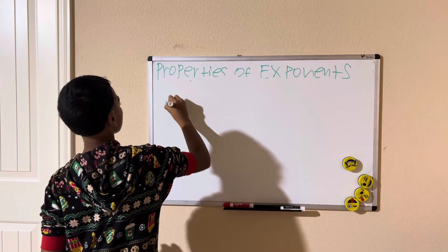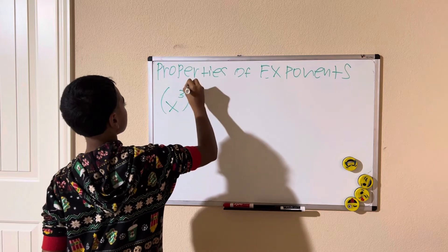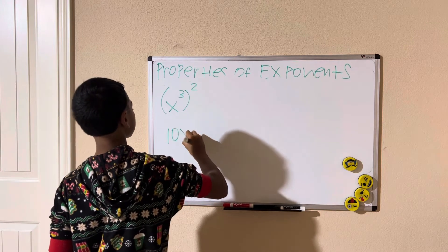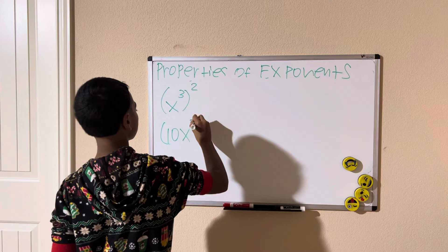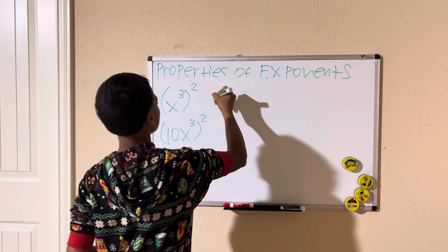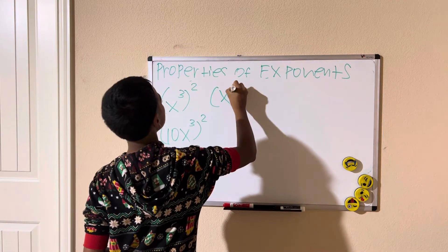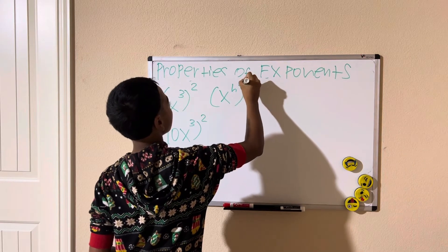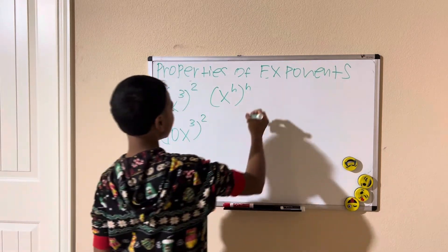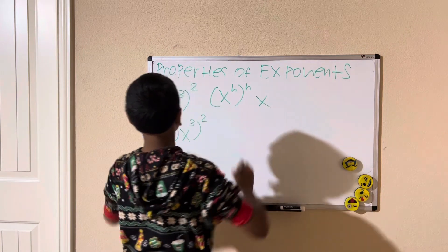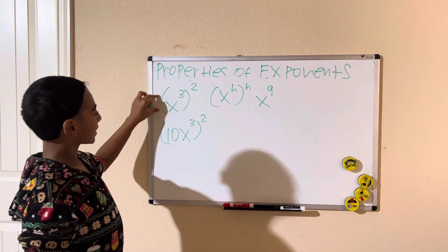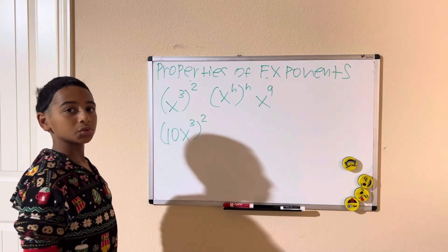Let's try a practice problem: x cubed squared. When you have a power raised to another power, you multiply the exponents. So x cubed squared: 3 times 2 is 6, giving us x to the sixth. You can also verify: x cubed times x cubed equals x to the ninth — wait, that's x to the sixth. Three times two is six, so the answer is x to the sixth.